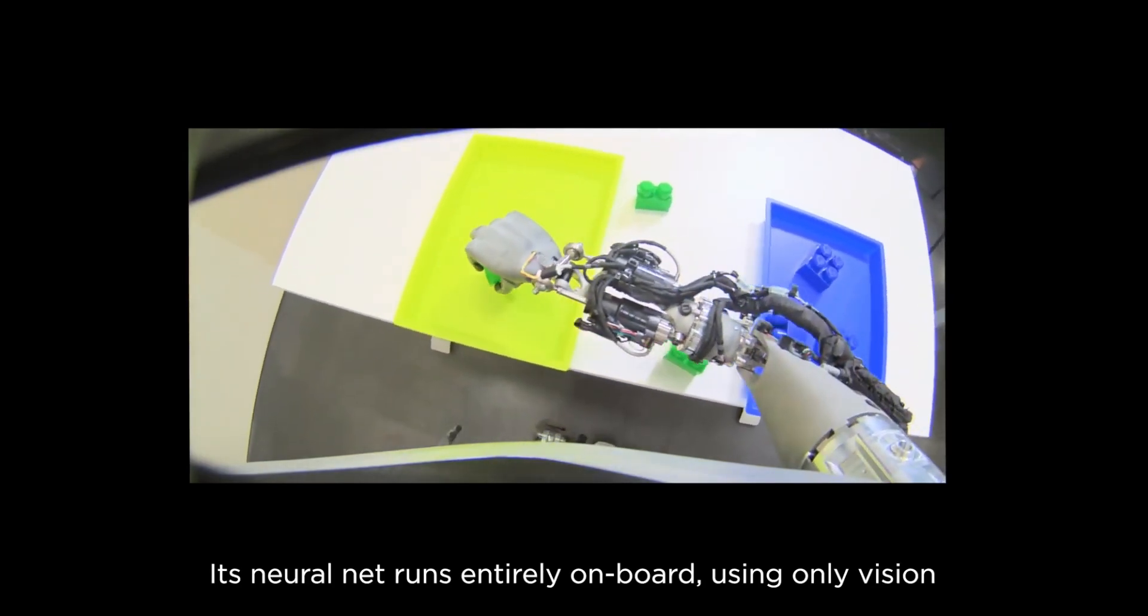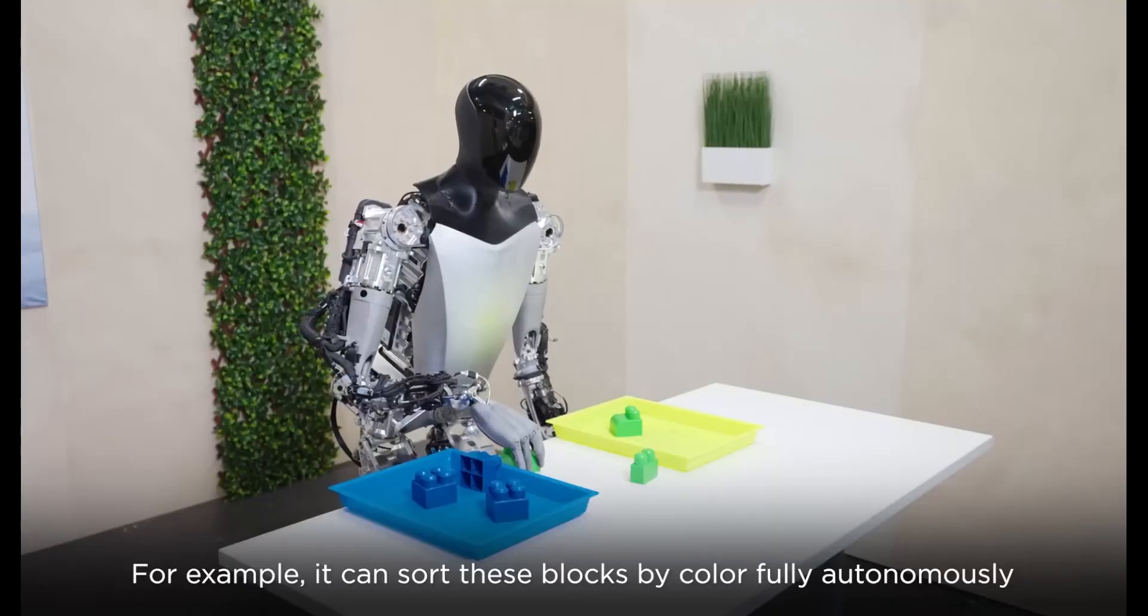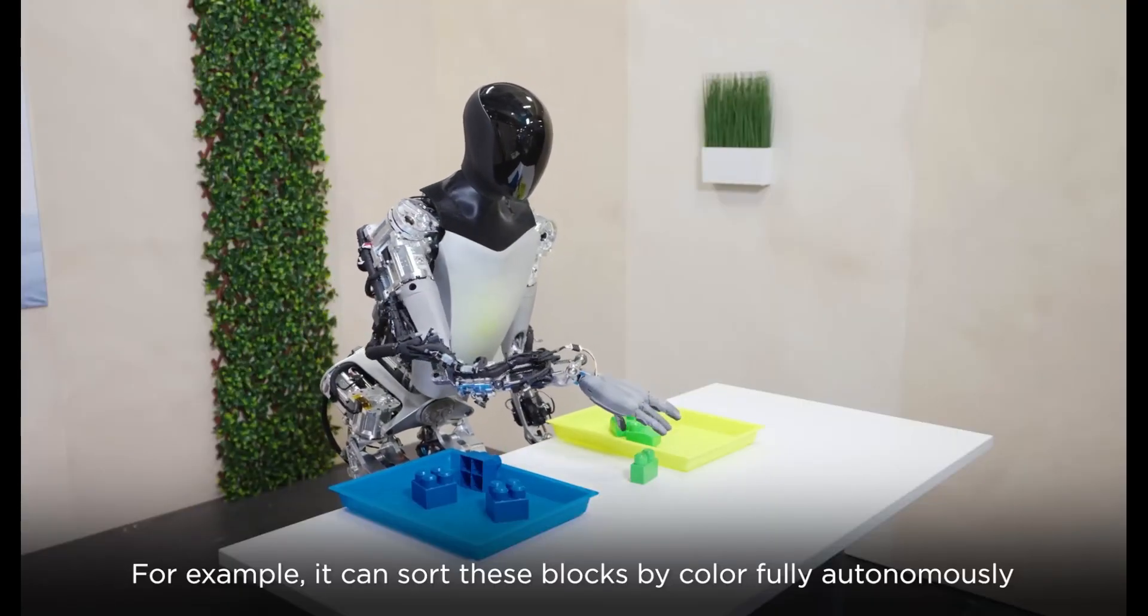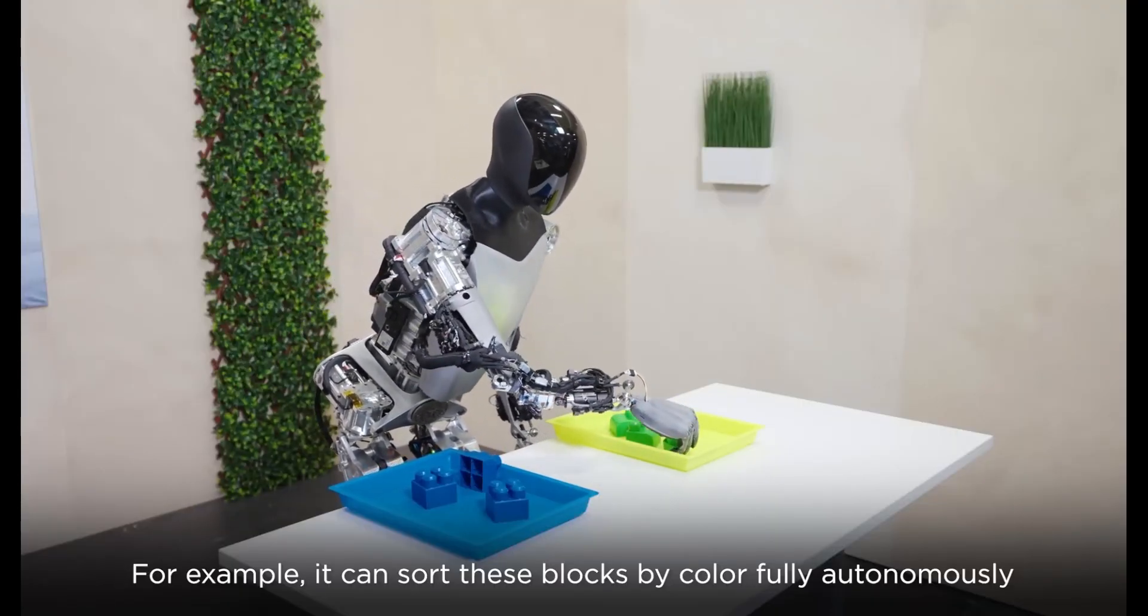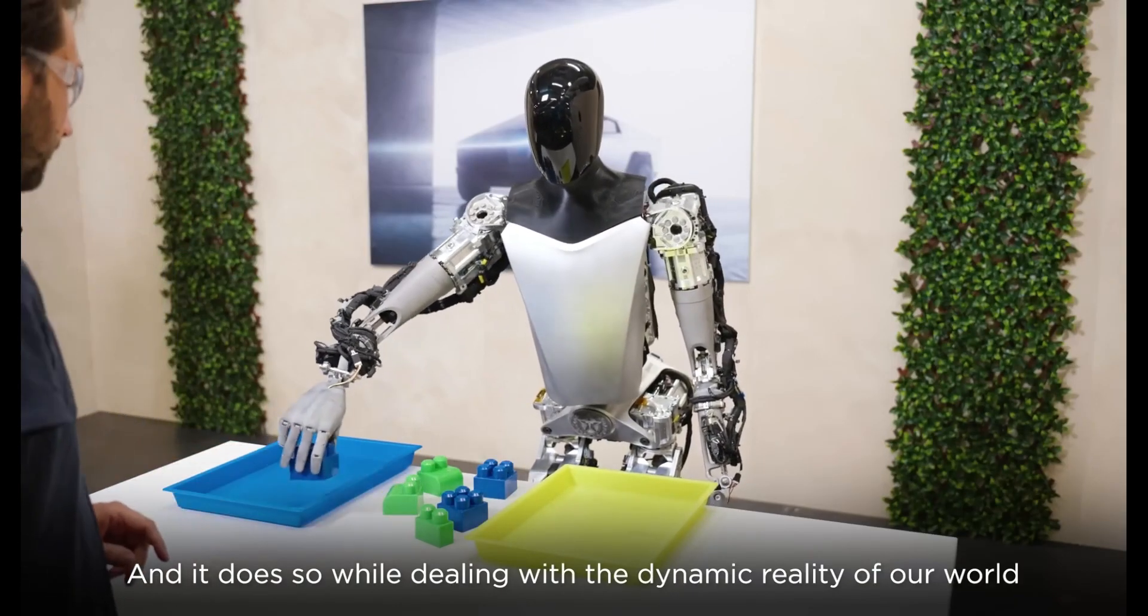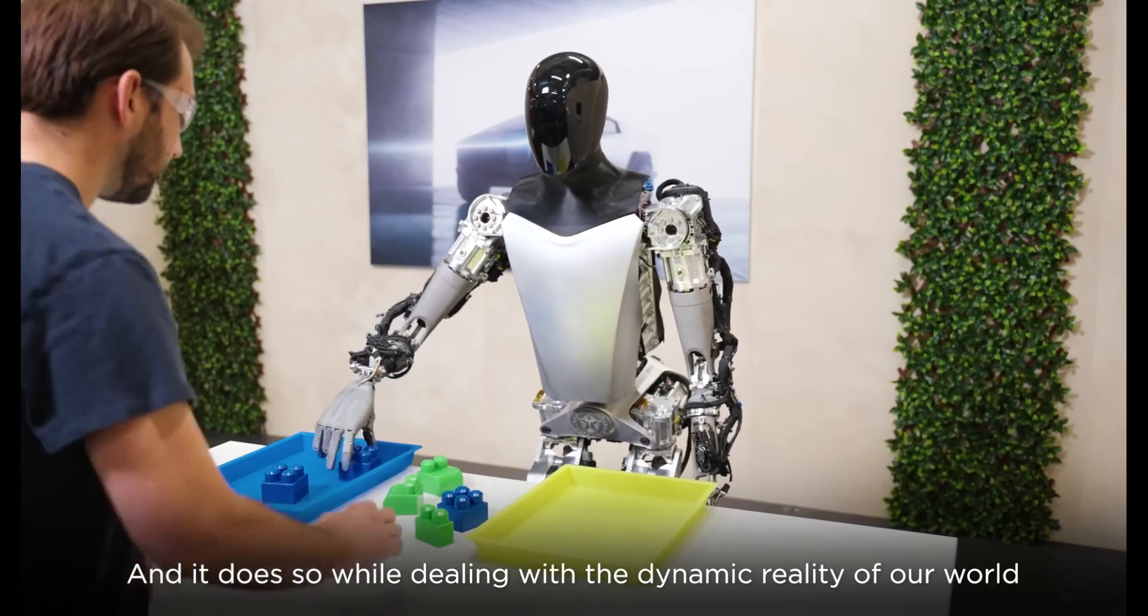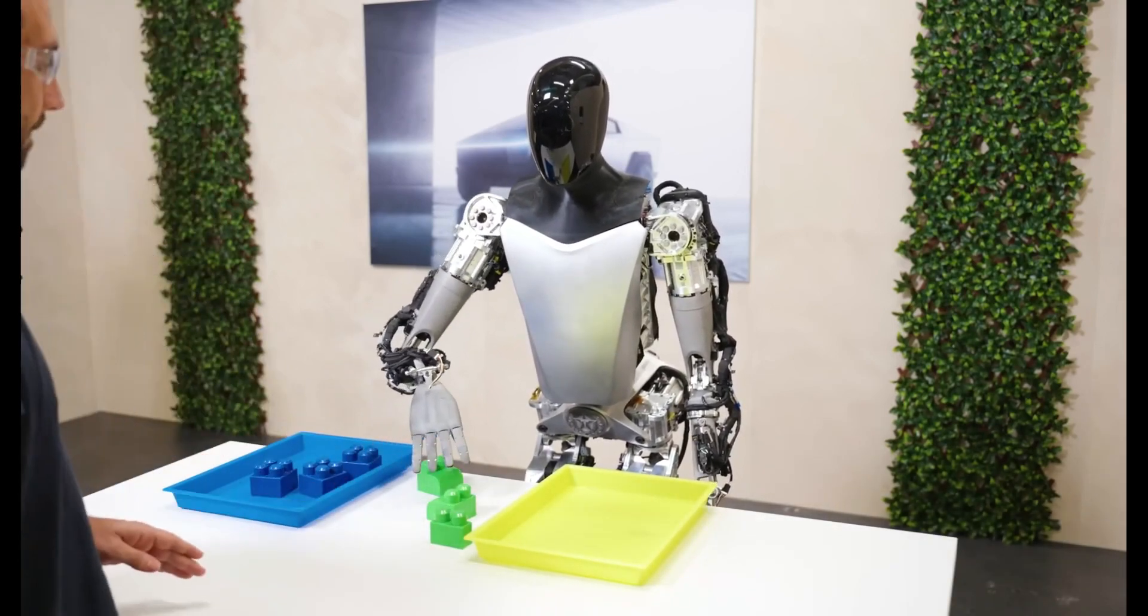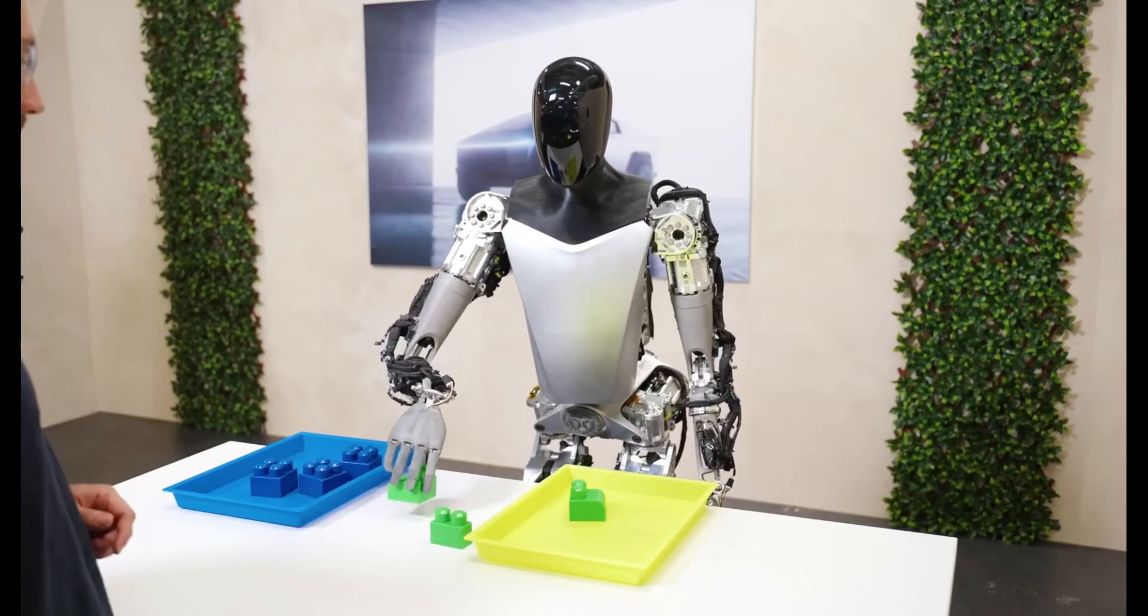Presently, Optimus can autonomously calibrate its arms and legs, as you can see on the video, using vision and joint position encoding, precisely determining their locations in space.